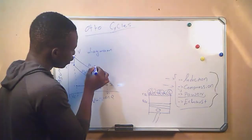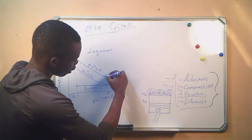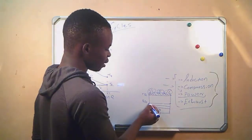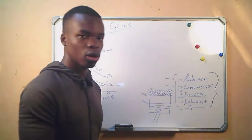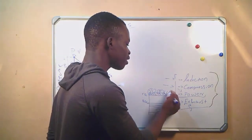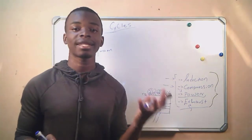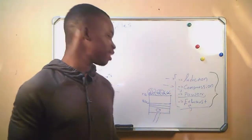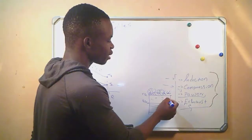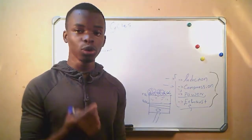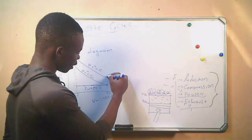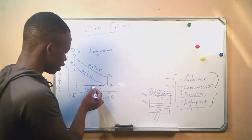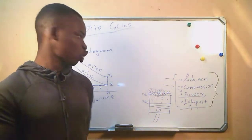This expansion also takes place under the adiabatic law, giving us T4. Our piston is now at the bottom dead center. Before the exhaust stroke, the outlet valve will open. We know that heat always flows from a high-temperature object to a low-temperature object. As this valve opens, the fuel mixture or burnt gases inside the chamber will lose some heat, resulting in a decrease in temperature. Then our exhaust stroke takes place, which is the reversal of the induction stroke.